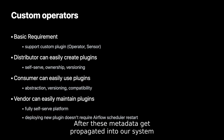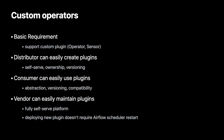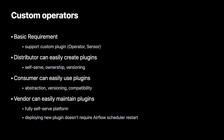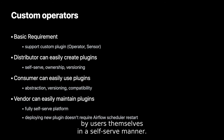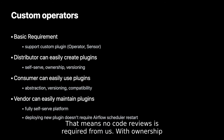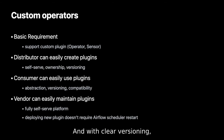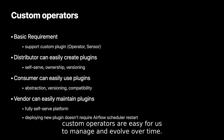After these metadata get propagated into our system, users can find the plugin in the marketplace and use it in their pipeline. Note that all these steps can be done by users themselves in a self-served manner — that means no code review is required from us. With ownership defined, we know who is responsible if a plugin needs to be fixed. And with clear versioning, custom operators are easy for us to manage and evolve over time.